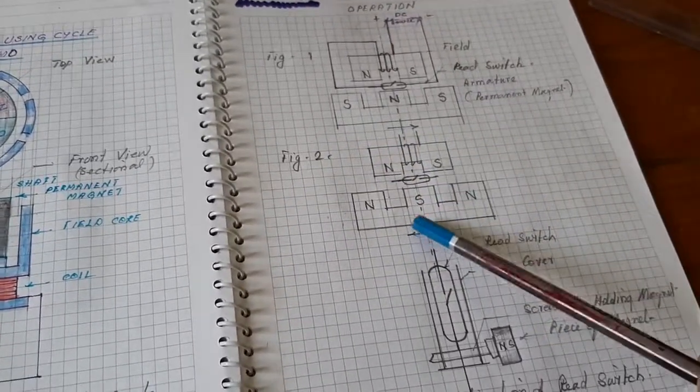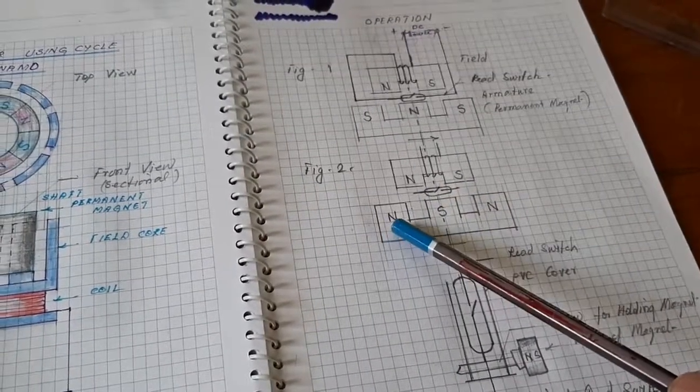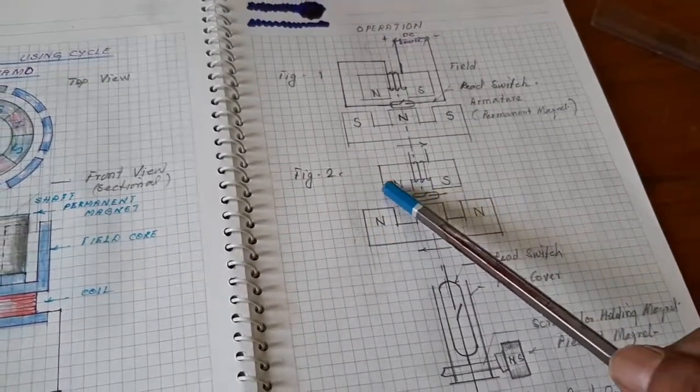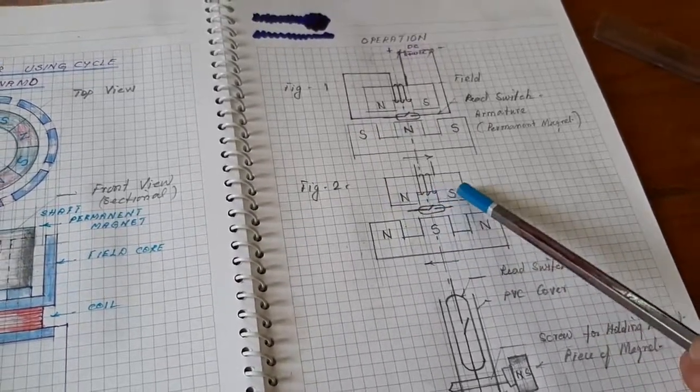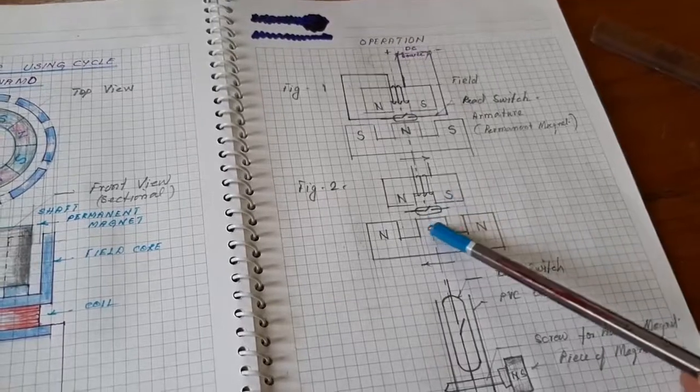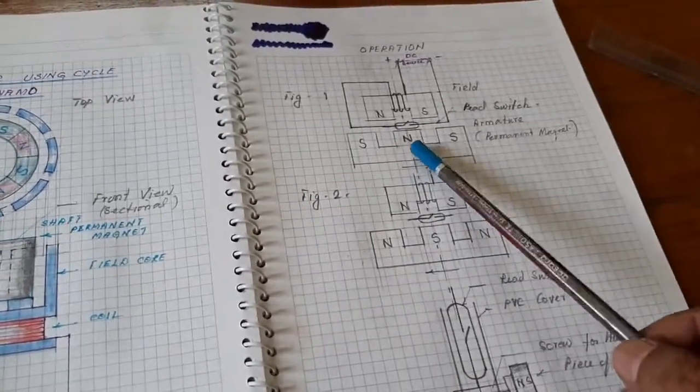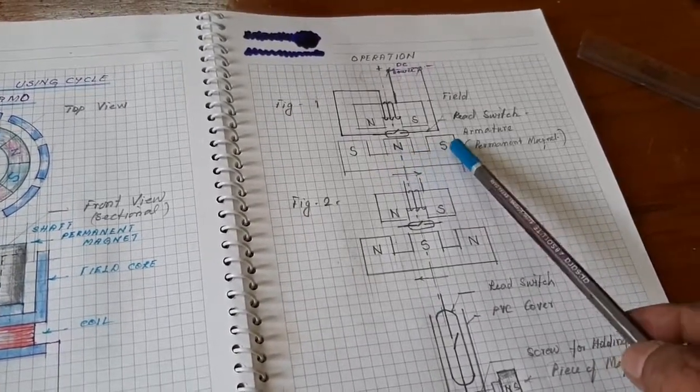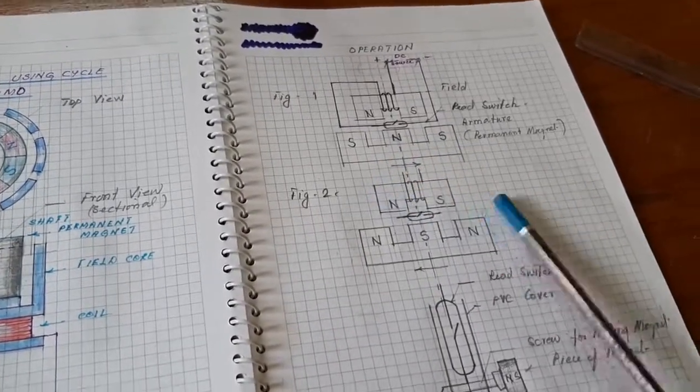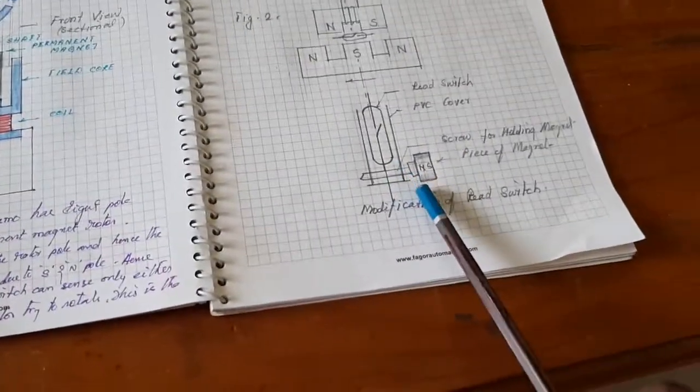After moving, when the south pole comes to the middle position, the reed switch senses it. The north pole is repelled by the field pole and the south pole is repelled. However, the motor does not continue running in either direction. Hence, a small modification is needed with the reed switch.